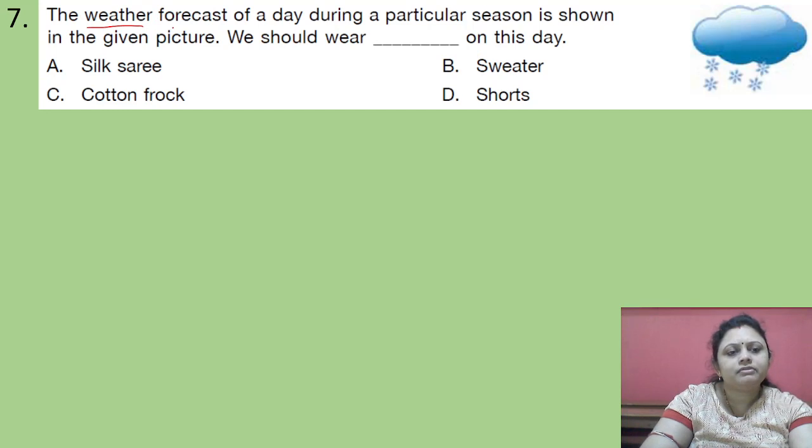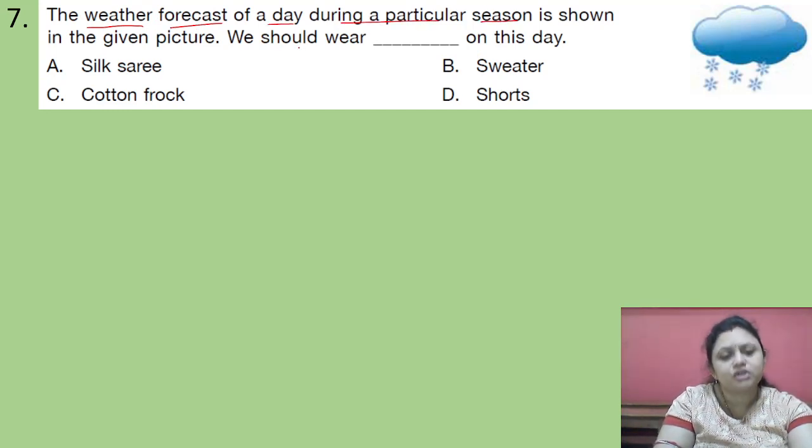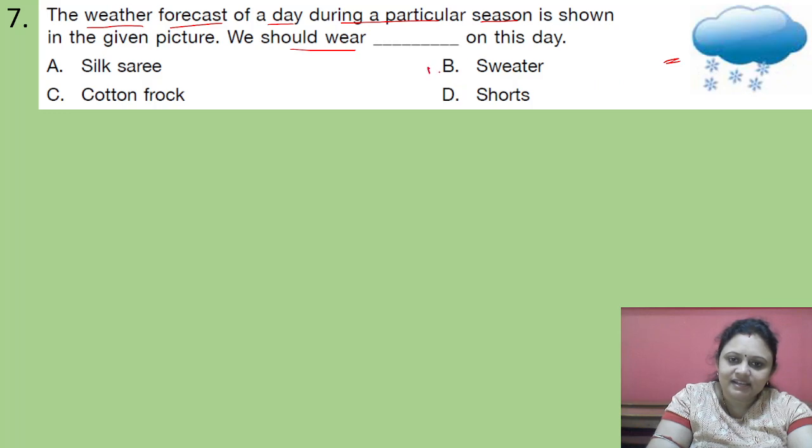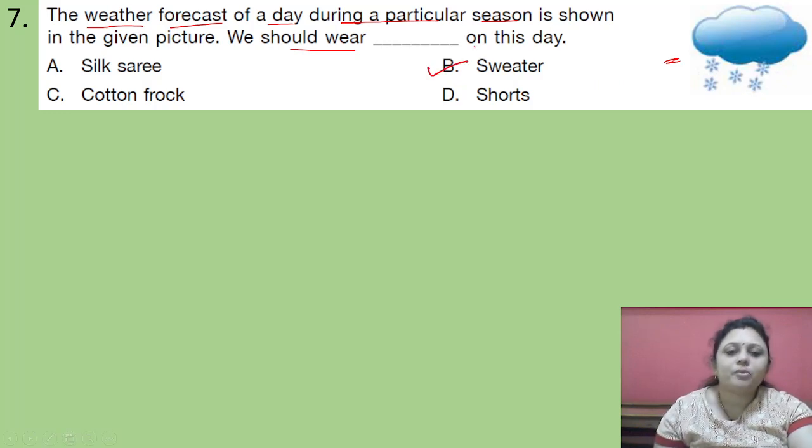The weather forecast of a day during a particular season is shown in the given picture. We should wear this on this day. Options are A. Silk sari. B. Sweater. C. Cotton frock. D. Shorts. So if this type of picture is showing in a particular season as the weather forecast that means it is indicating the snowfall. And snowfall occurs in winter. So in winter what should we wear? We should wear sweater. So correct answer is option B.